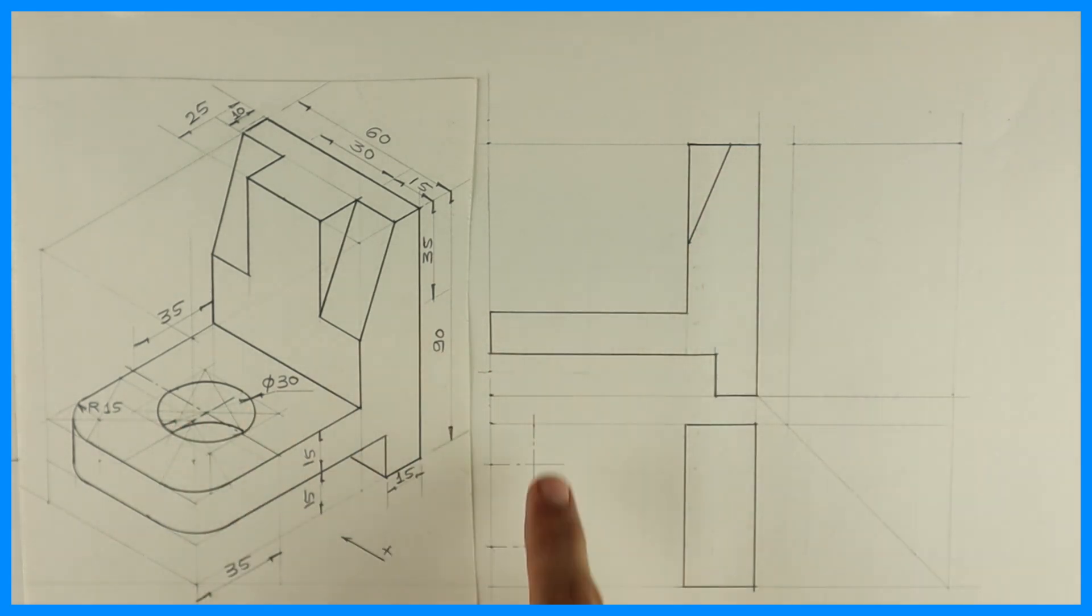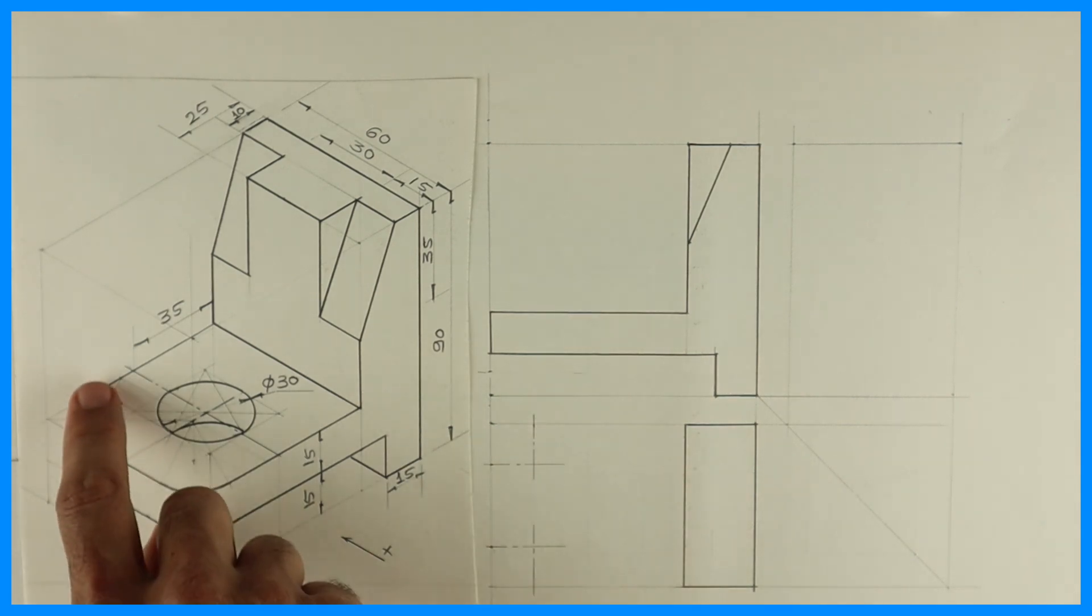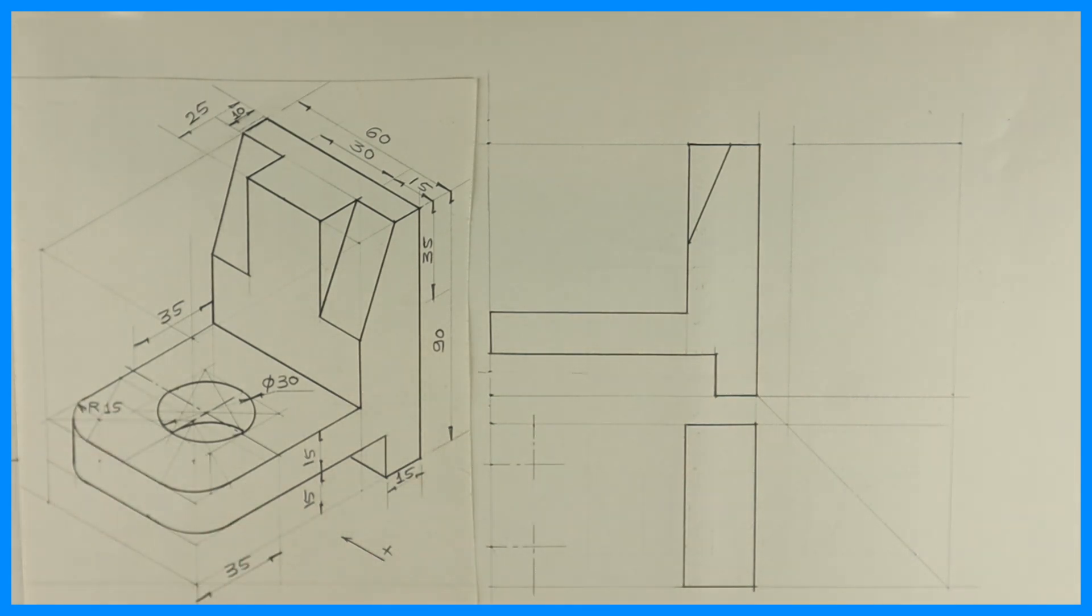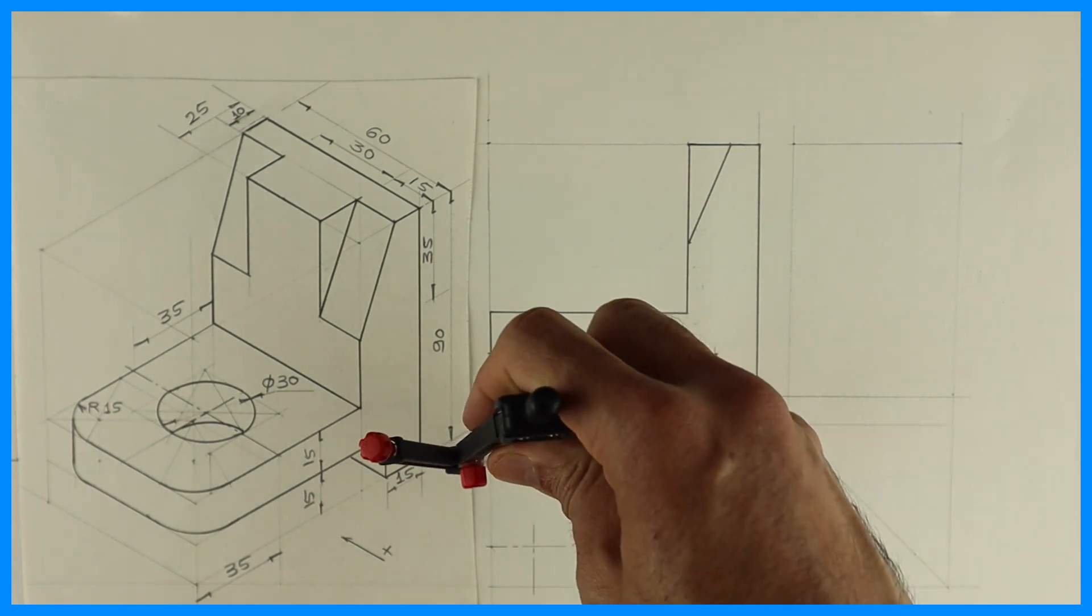See this circle we need to draw that dot line we have to draw and we are drawing this circle. So first we are drawing radius 15.